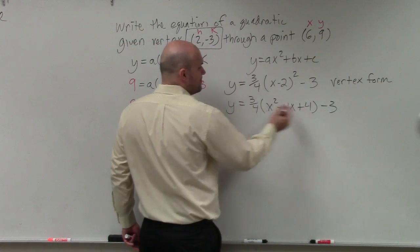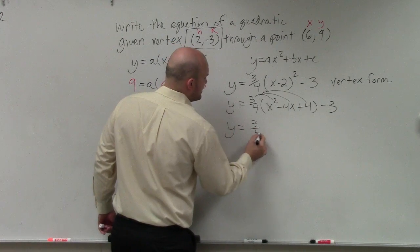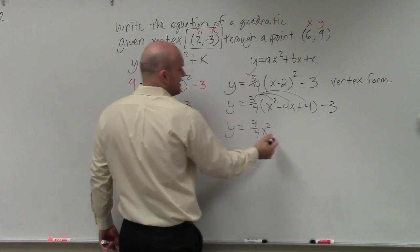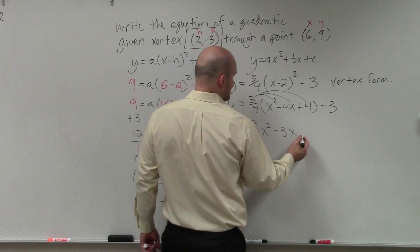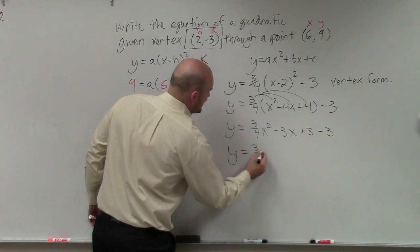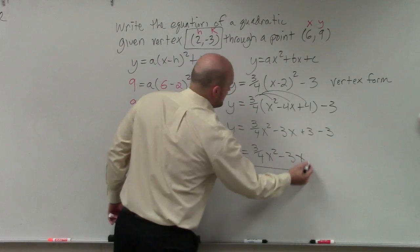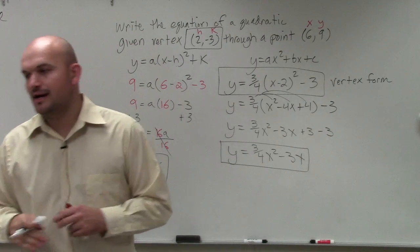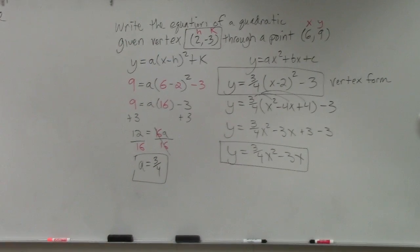Now I need to apply distributive property. So y equals 3 fourths x squared. The fours will divide out. So that's a negative 3x. Again, the fours divide out. So that's going to be plus 3 minus 3. And your final answer in standard form would be that. I skipped by some algebra steps to make sure that I could move along with this.